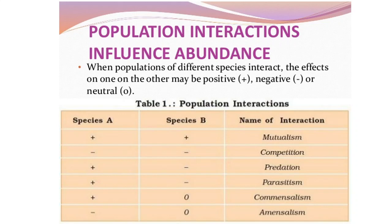Accordingly, population interactions have been categorized into different types. When populations of different species interact, the effects on one may be positive, negative, or neutral. Suppose there are two species — species A and species B — and their populations are interacting with each other.